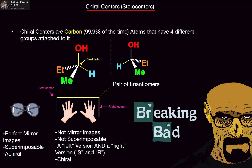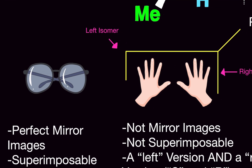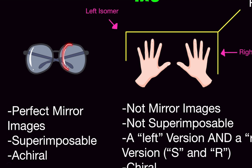There's some terminology you should know that will be useful for future videos and exams. Imagine you have sunglasses where the lenses are perfectly similar — identical. If you pop out one lens and place it over the other, they match up exactly. When they line up perfectly on top of each other like that, we call them superimposable, and by default those molecules are achiral.